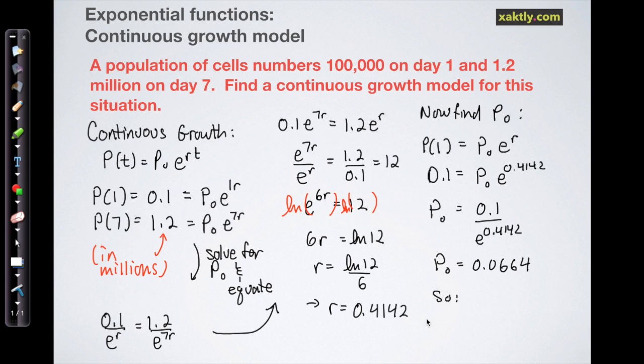So we can finally write out our final model and it's P(t) is equal to P_0, 0.0664 times e^(0.4142t) and that should model that population pretty well.